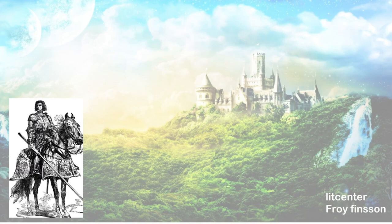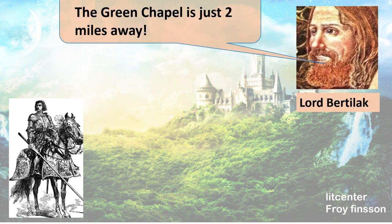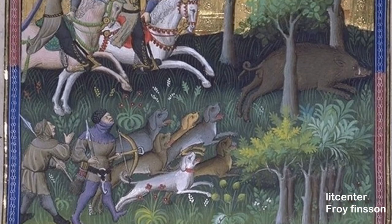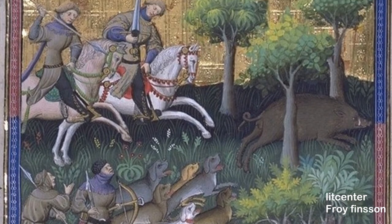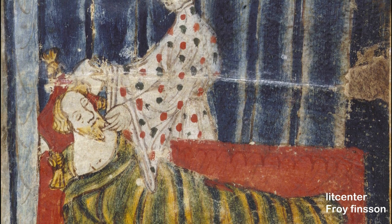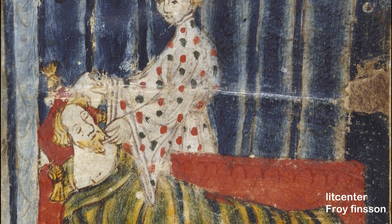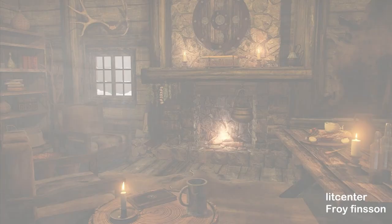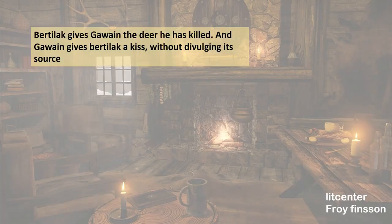The year passes and soon Gawain sets out to seek the Green Chapel. On his way, he comes across a splendid castle where he meets Bertilak, the lord of the castle. Bertilak tells him that the path to the Green Chapel is just two miles away. Gawain still has some days left until the meeting, so he rests at the castle. Before going hunting the next day, Bertilak proposes a bargain: he will give Gawain whatever he catches, on the condition that Gawain gives him whatever he might gain during the day. After Bertilak leaves, Lady Bertilak visits Gawain's bedroom and behaves seductively, but he yields nothing but a single kiss. When Bertilak returns and gives Gawain the deer he has killed, his guest gives him a kiss without divulging its source.